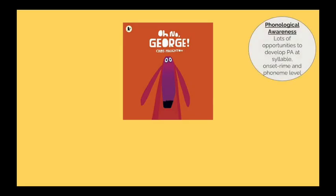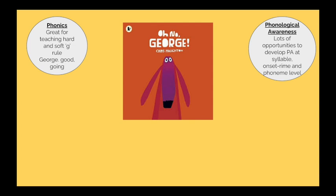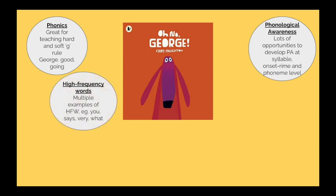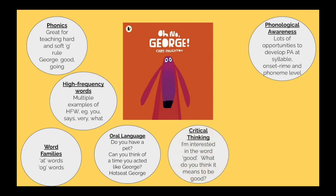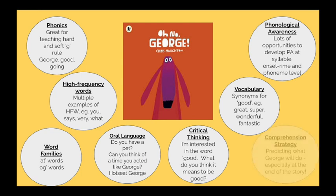So what can I do with a text like Oh No George? Let's think about our literacy continuum. Starting by connecting it to some phonological awareness, move on to phonics, high-frequency words arising from the text, word families, conversation points connecting to what's happening in the story. Plenty of opportunities for contextualised vocabulary development. And don't forget critical thinking and a comprehension strategy like predicting — so many skills, all in a purposeful, contextualised manner.